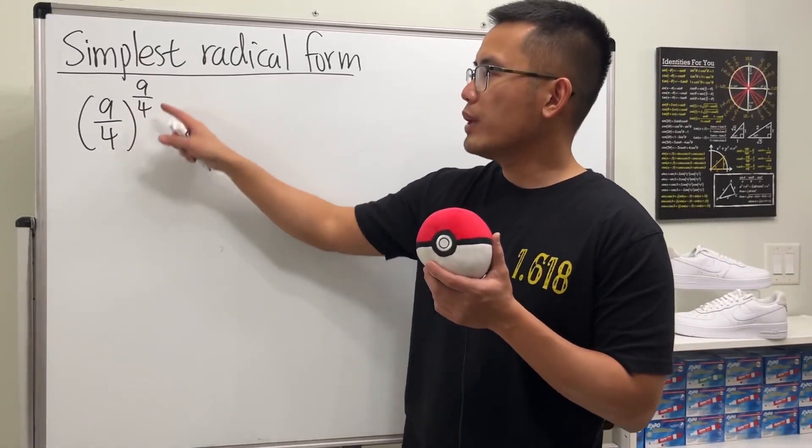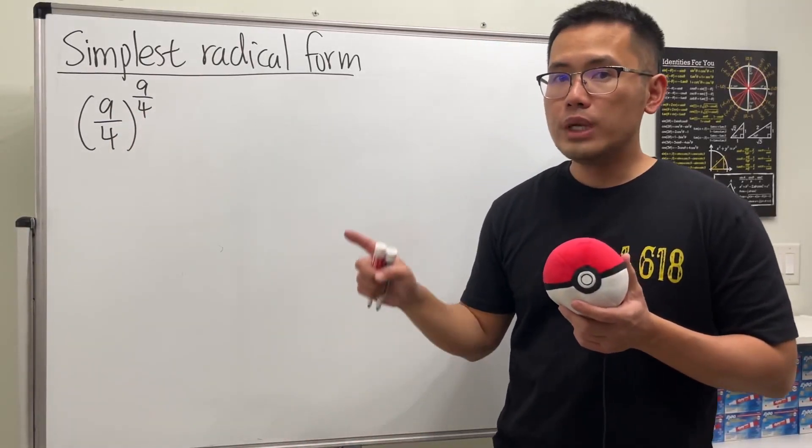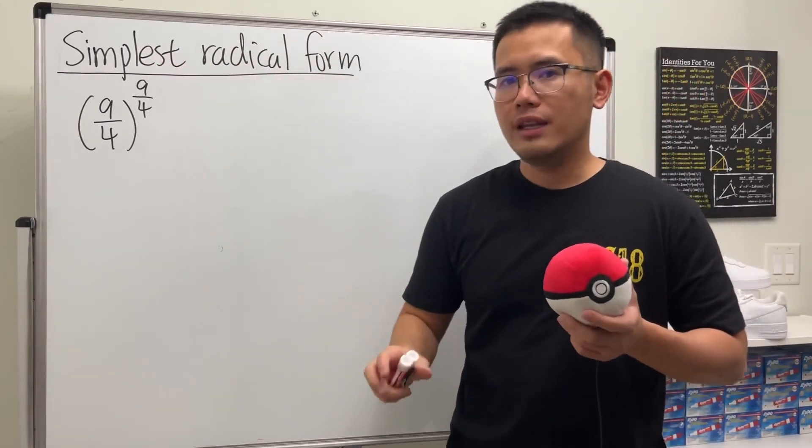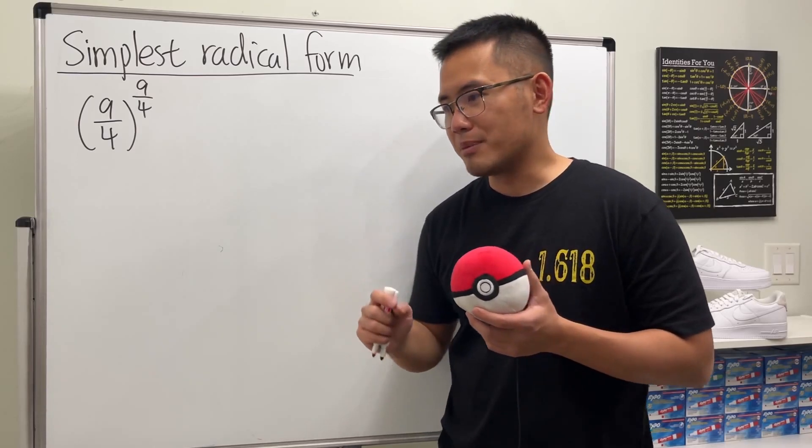So here we have 9 over 4 raised to the 9 over 4th power, and we are going to rewrite this into simplest radical form. And we cannot have a radical in the denominator, so keep that in mind.